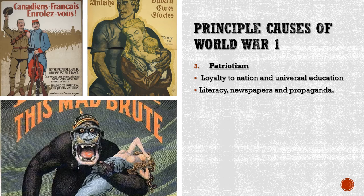Patriotism usually implies that the enemy is evil and something other than human. For example, look at the poster at the bottom — that's how the Allies depicted Germans: as mad brutes, like apes going to destroy Europe and all civilization. In the upper right, a poster encouraging German young men to sign up shows a German man protecting his family — his wife and child — the idea being you had to do your part for the country. In the upper left, a French Canadian poster says 'French Canadians, enroll,' calling on their loyalty to both Canada and France, with the slogan 'our first line of defense is in France.'